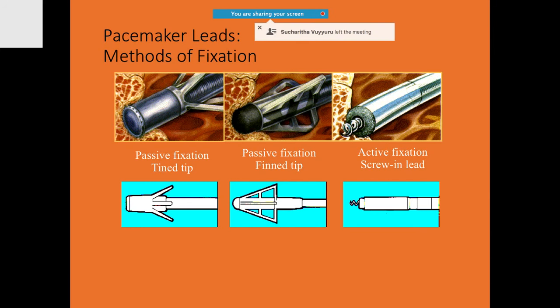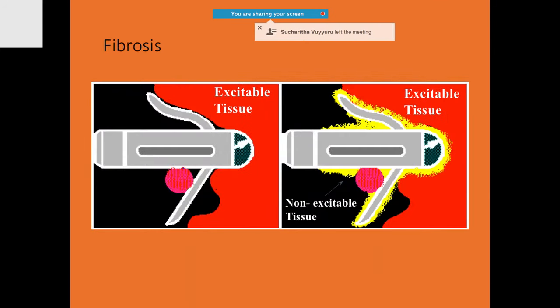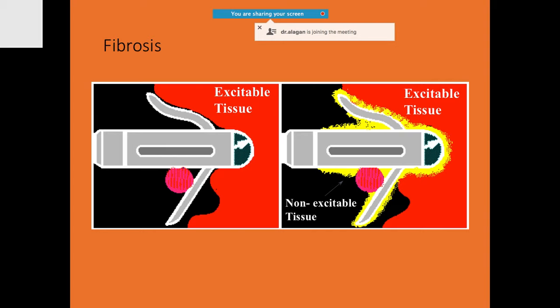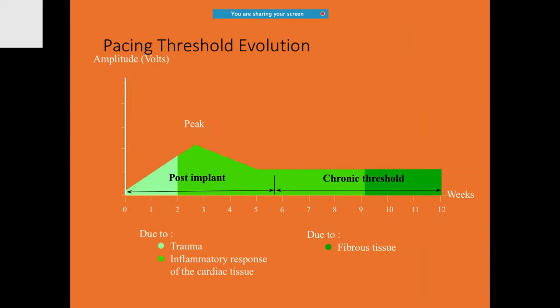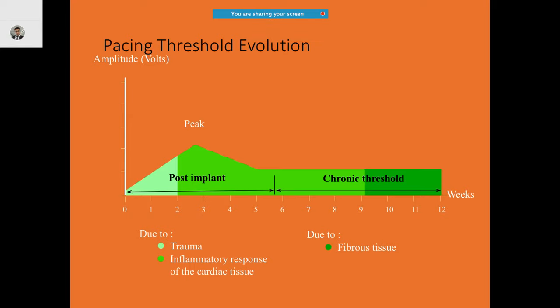However, if it has an active fixation, you can use a screw-in mechanism. Whenever you have done the lead fixation, the tissue may be excitable, but with time there may be fibrosis as well. This is why initially the amplitude may be really low, but after implantation the amplitude can go to really high levels, then later on with time the chronic threshold tends to start decreasing and stabilize.